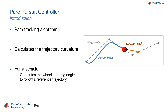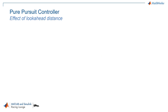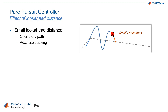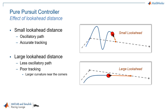As the vehicle turns towards the reference path, the point continues to move forward, reducing the steering angle, and slowly bringing the vehicle on the path. The lookahead distance is the main tuning property of the controller. For smaller lookahead distance, the path is oscillatory and accurate, and for a larger lookahead distance, the path is less oscillatory.